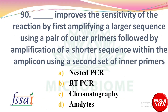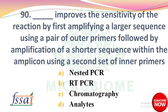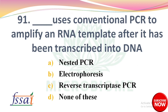DASH improves the sensitivity of the reaction by first amplifying a larger sequence using a pair of outer primers, followed by amplification of a shorter sequence within the amplicon using a second set of inner primers. Options: A) Nested PCR, B) RT-PCR, C) Chromatography, D) Analytes. The right answer is option A: Nested PCR.